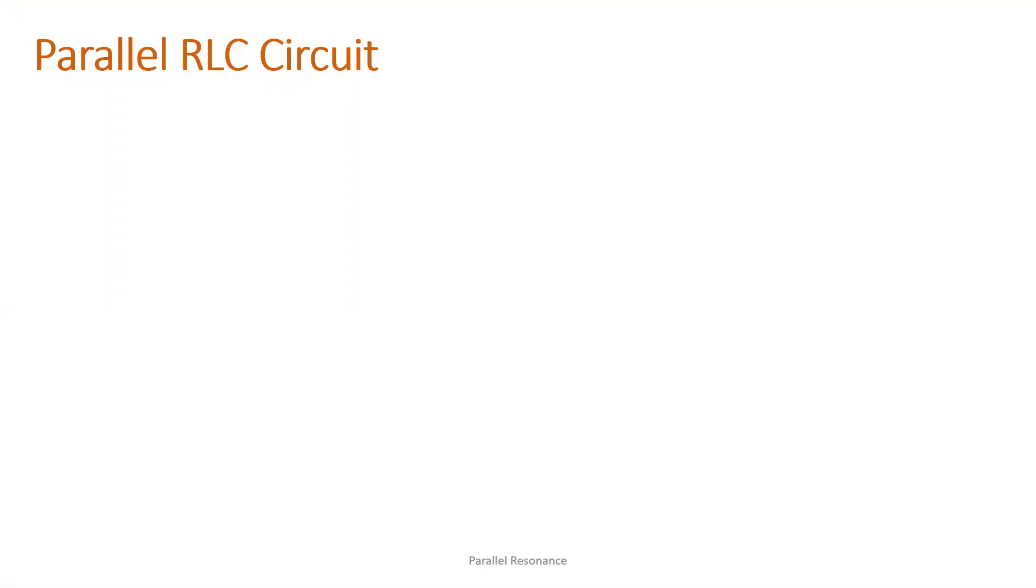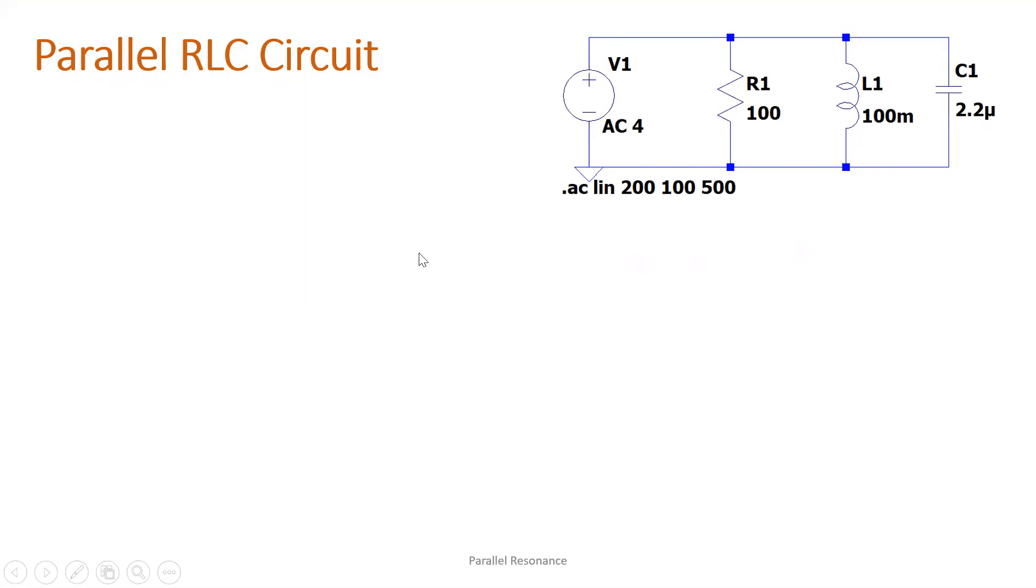So let's have an example for the parallel RLC circuit. Suppose we have this circuit, 100 ohms, 100 millihenries, and 2.2 microfarad. So current is minimum at the resonant frequency. This is what we are expecting.